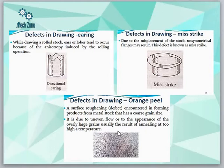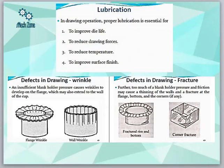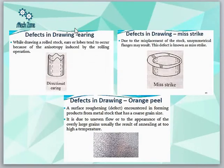Orange peel is a defect mainly caused by large grain size. To summarize the defects: wrinkle is because of insufficient blank holder force; earring is because of anisotropy; and orange peel is because of large grain size. The main thing to remember is the defect name and its primary cause.